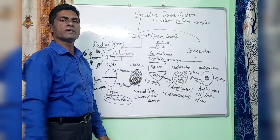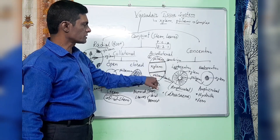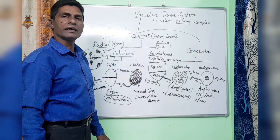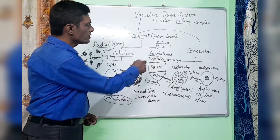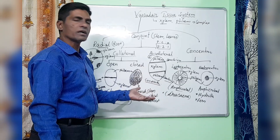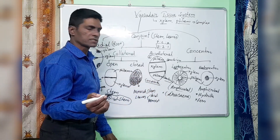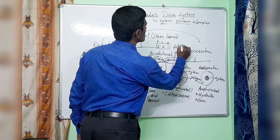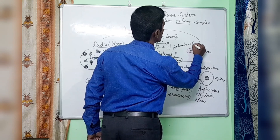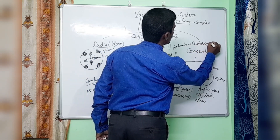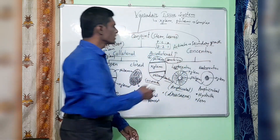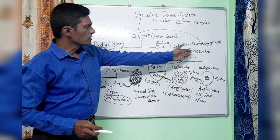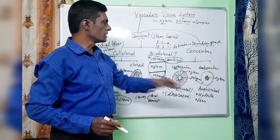Bicollateral vascular bundles have two patches of phloem on two sides — upper and lower — two cambiums, and xylem at the center separated by the two cambiums. An important question: if secondary growth starts in a bicollateral vascular bundle, which cambium will be activated? The upper cambium will be activated and actively participate in secondary growth. This is a common question asked about bicollateral vascular bundles.